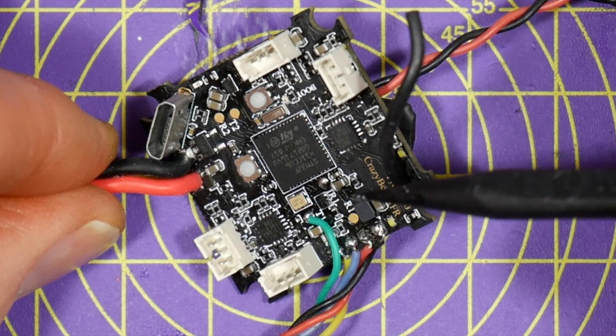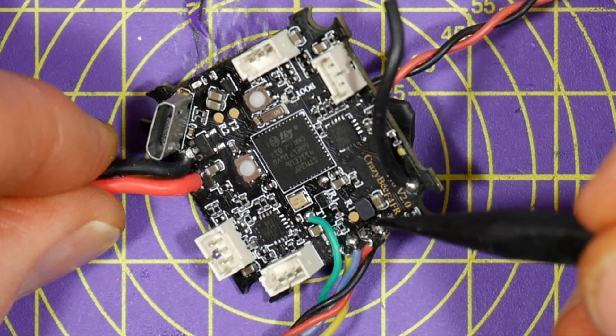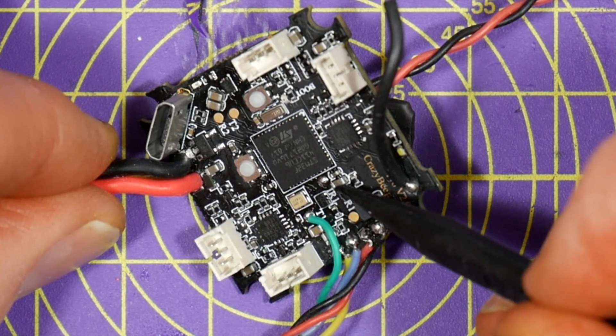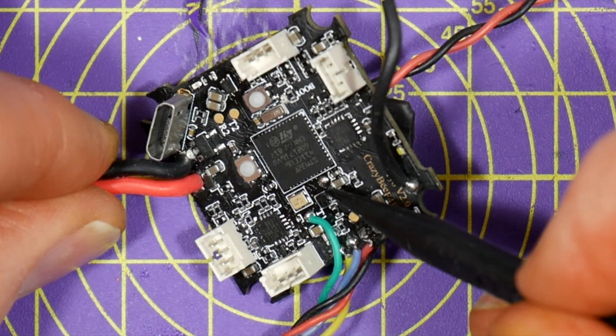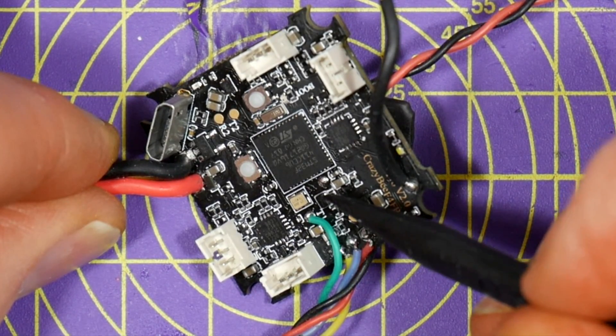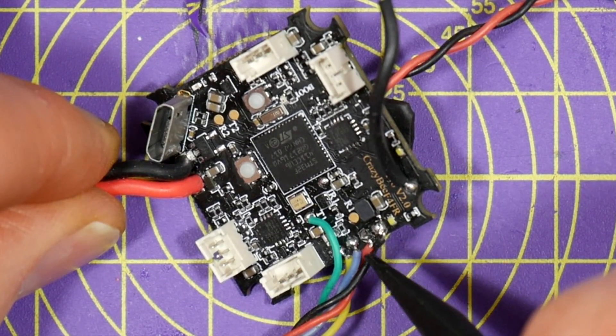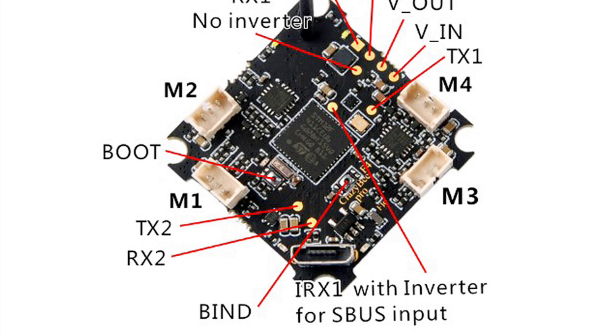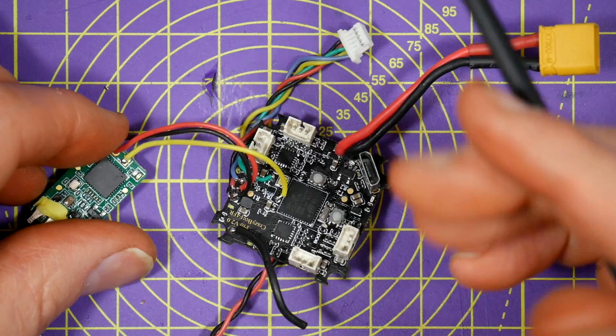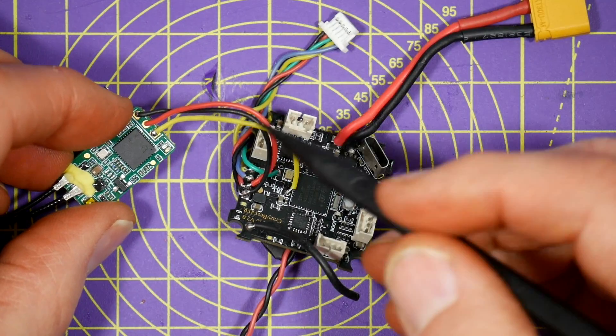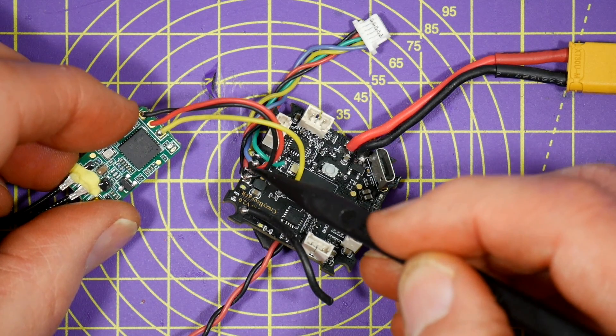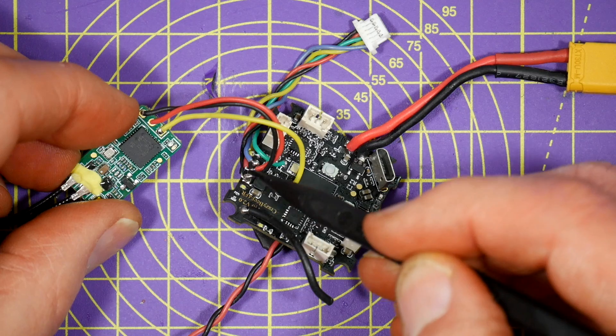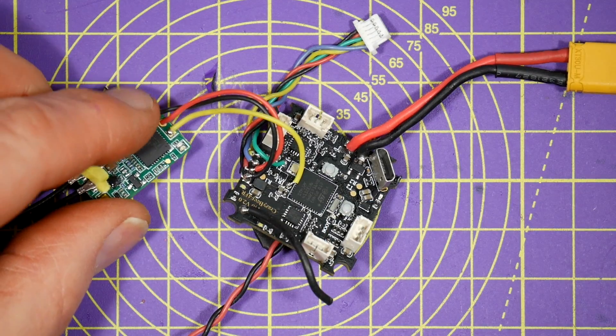Changing the receiver is pretty easy. The CrazyBee F4 board conveniently has an IRX1 inverted input for SBUS just here. And we can pick up the 5V and ground that we need to power the receiver from these points here. So there we go, that's all connected up magically. We've got the SBUS connected to the IRX1 pin just here, and then we've picked up 5V and ground from the edge connector here.